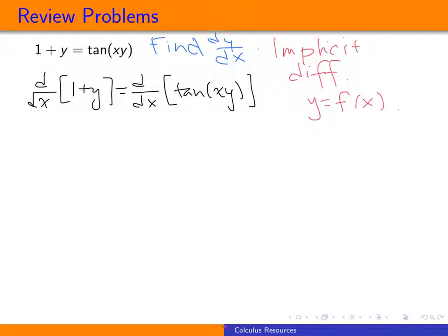When I go to take the derivative of 1 plus y, the derivative of 1, 1's just a constant, so its derivative is 0. Now, the derivative of y, that's just the derivative of y. So we write dy dx. We don't exactly know what it is. In fact, it's the thing we're trying to find. But the derivative of y is dy dx.